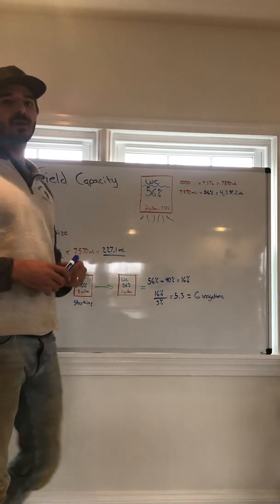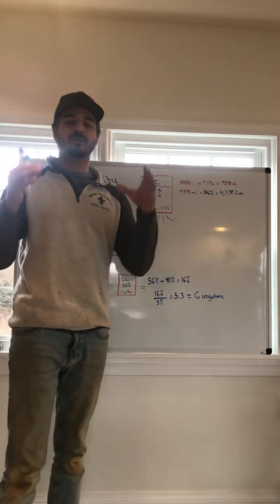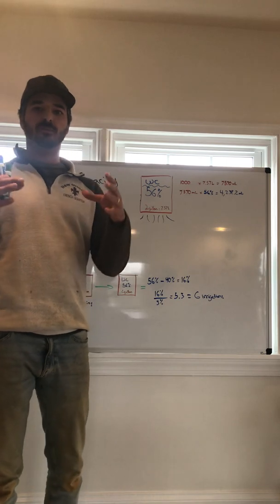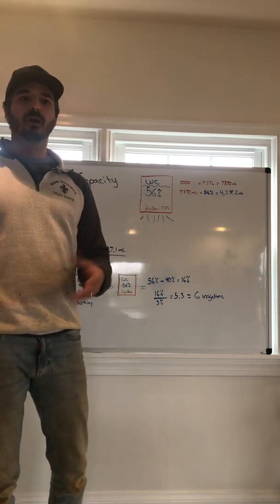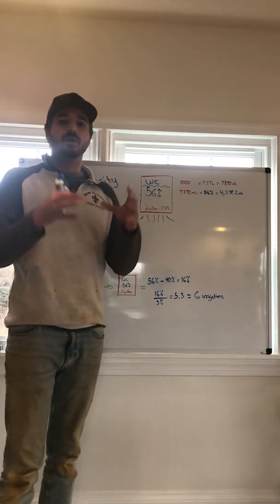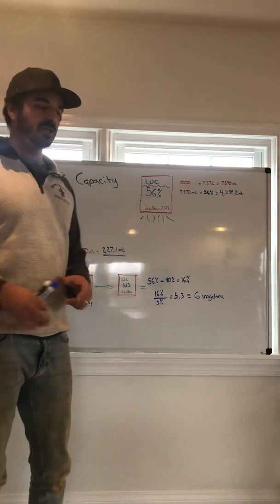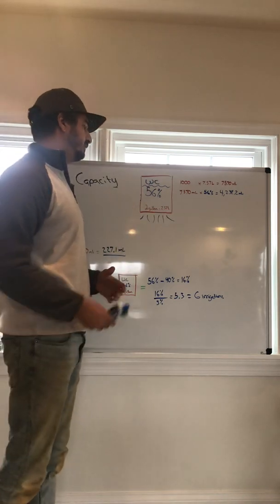Field capacity. What is it? Field capacity represents the maximum amount of solution that a medium could hold before you achieve runoff. So that's the max amount of water that any medium could hold before you achieve runoff. That's the general idea of what field capacity is.